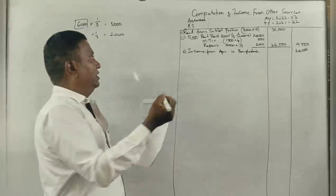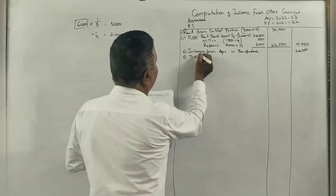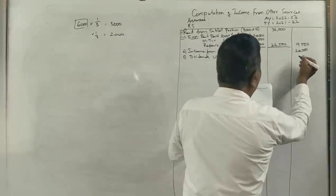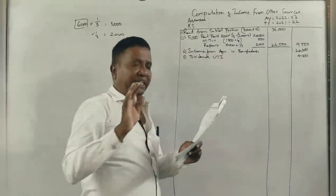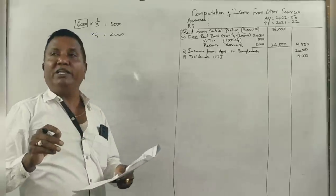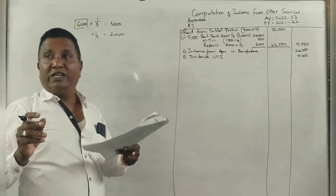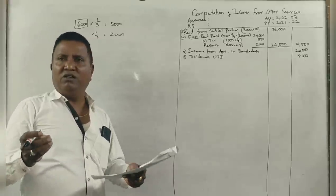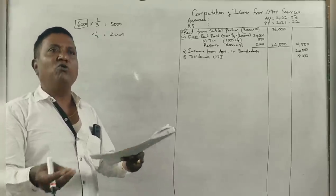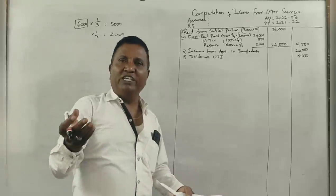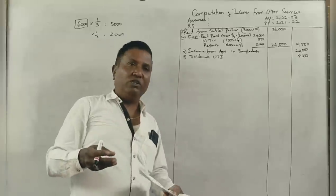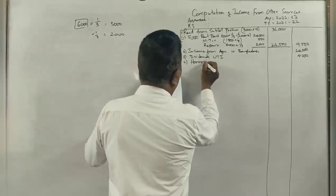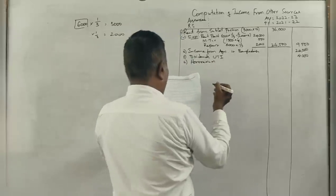Next point, dividends. Any dividends are fully taxable, whether from UTI, foreign company, or Indian company, whatever it is, it is fully taxable. Next, honorarium received for writing articles in magazines is 1,000 rupees, fully taxable under income from other sources.